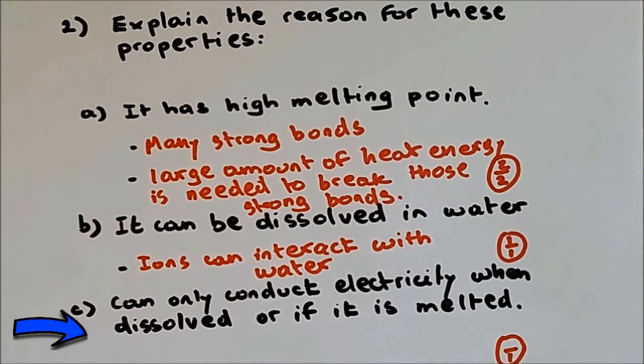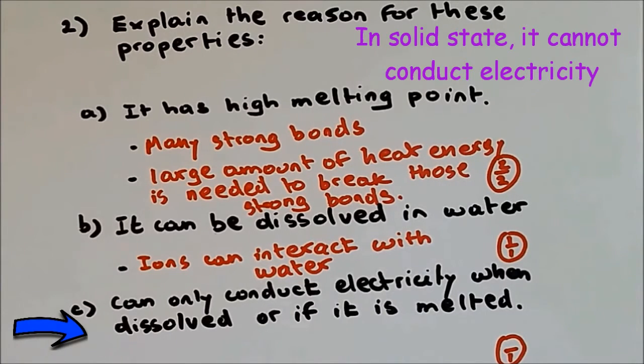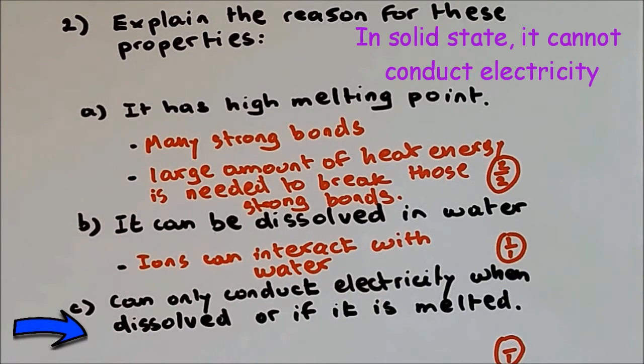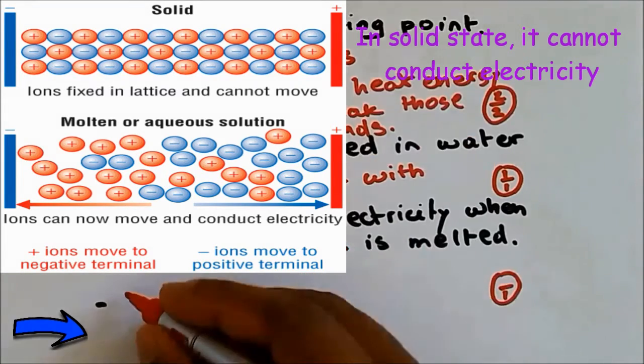If the giant ionic structure is melted or dissolved in water, then it can conduct electricity. But if it is found as a solid, then it won't conduct electricity. And the reason is because in the solid state the ions are fixed in one place, but when it is dissolved or molten, the ions are free to move around and therefore can conduct electricity. So the answer is: if dissolved or melted, the ions are free to move around.